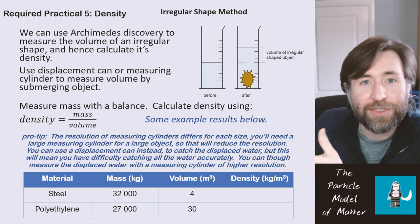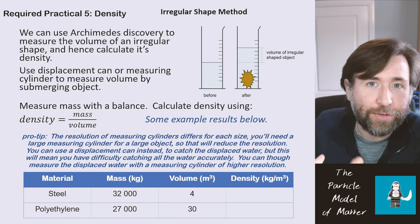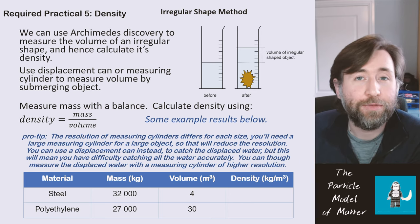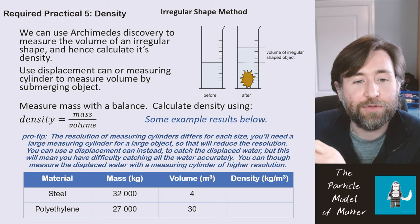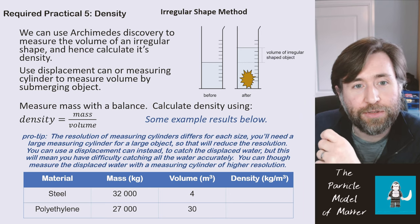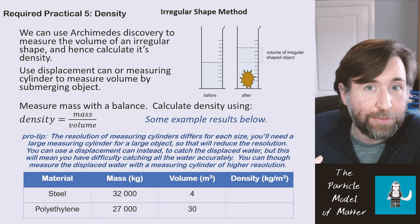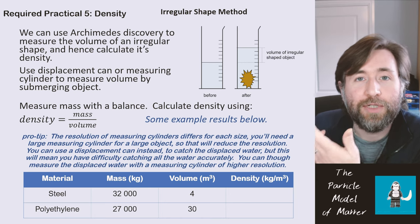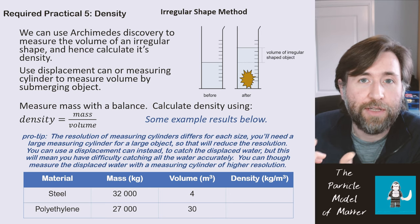that with the measuring cylinders, because the resolution actually differs depending on what it can hold and what size it is. So if you use a very large measuring cylinder for a very large object, then you're going to find it difficult to get a high resolution, because perhaps it only measures to the nearest ten centimeters cubed, or maybe even the nearest hundred centimeters cubed, and that won't give you a very accurate result because of that resolution.